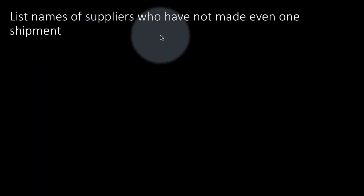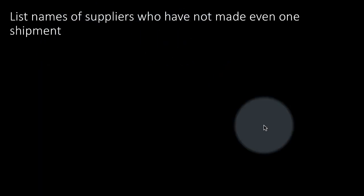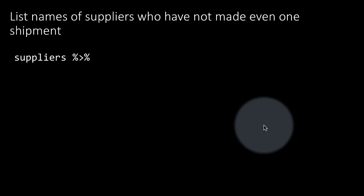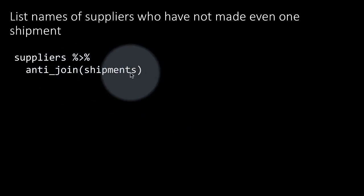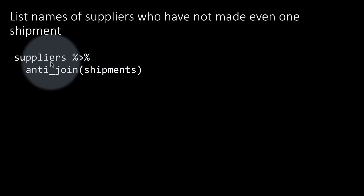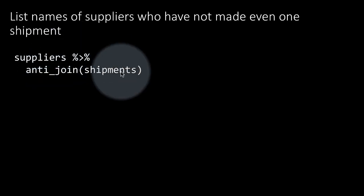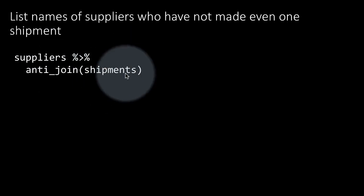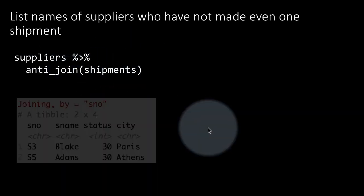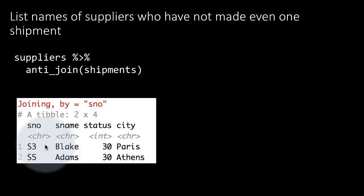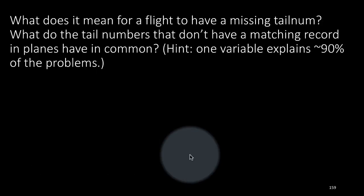To list the names of suppliers who have not made even one shipment, we do an anti-join of suppliers and shipments, because anti-join only retains non-matching rows. If a supplier has not made a shipment, that supplier won't be in the shipments table, so anti-join will keep only those suppliers who have not made any shipments. Therefore, S3 and S5 show up here.